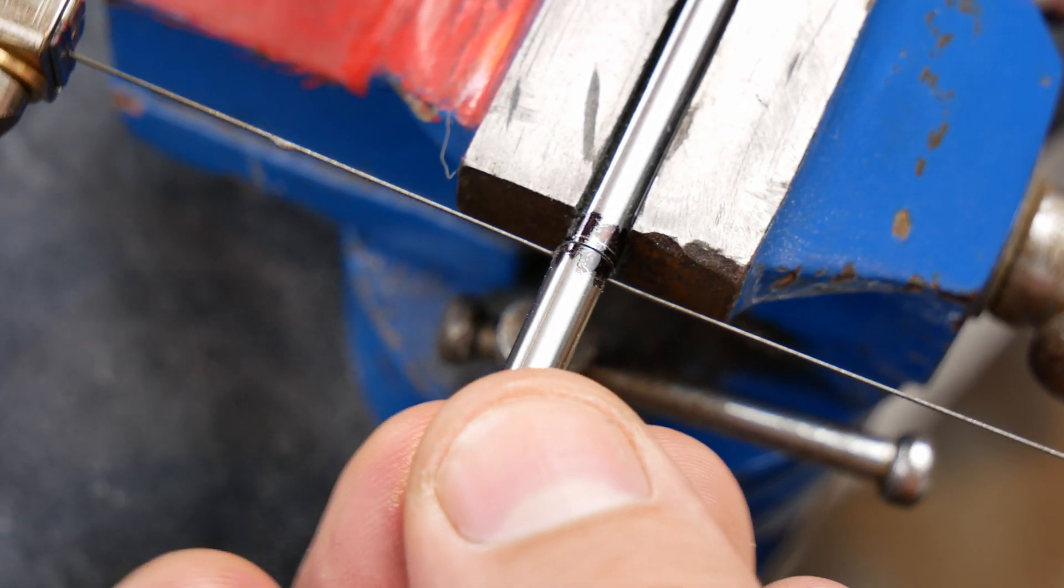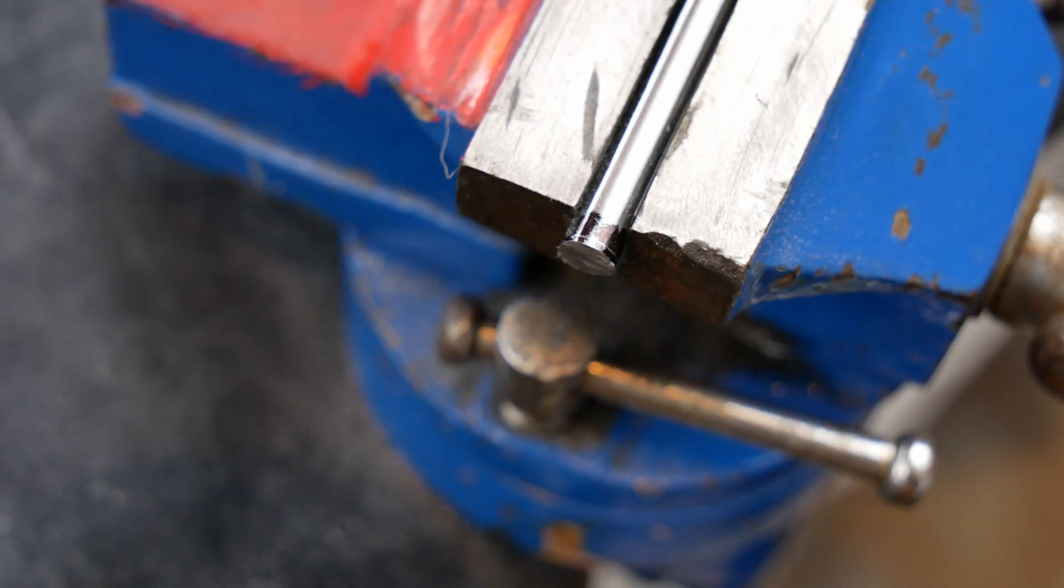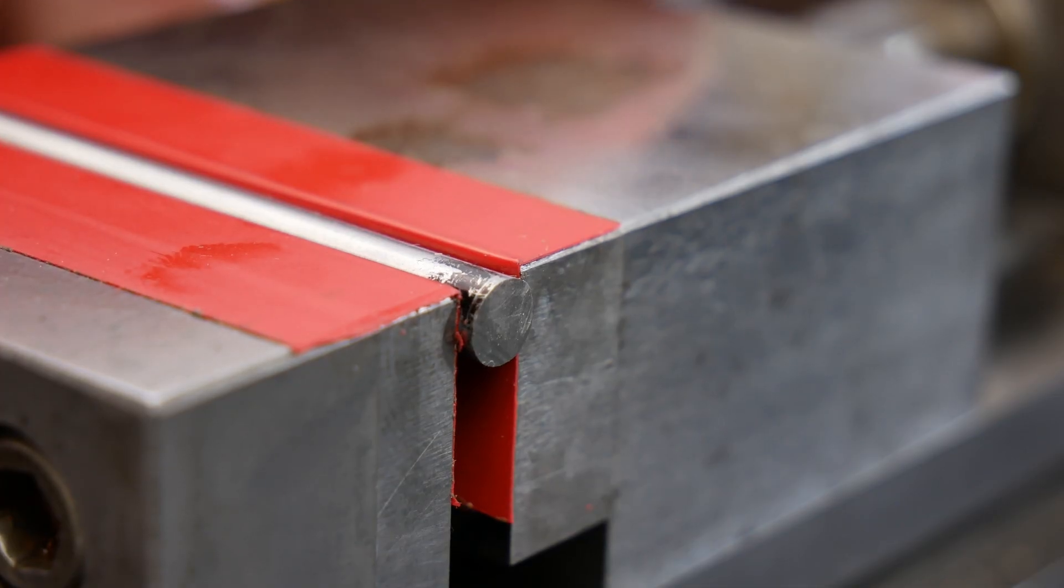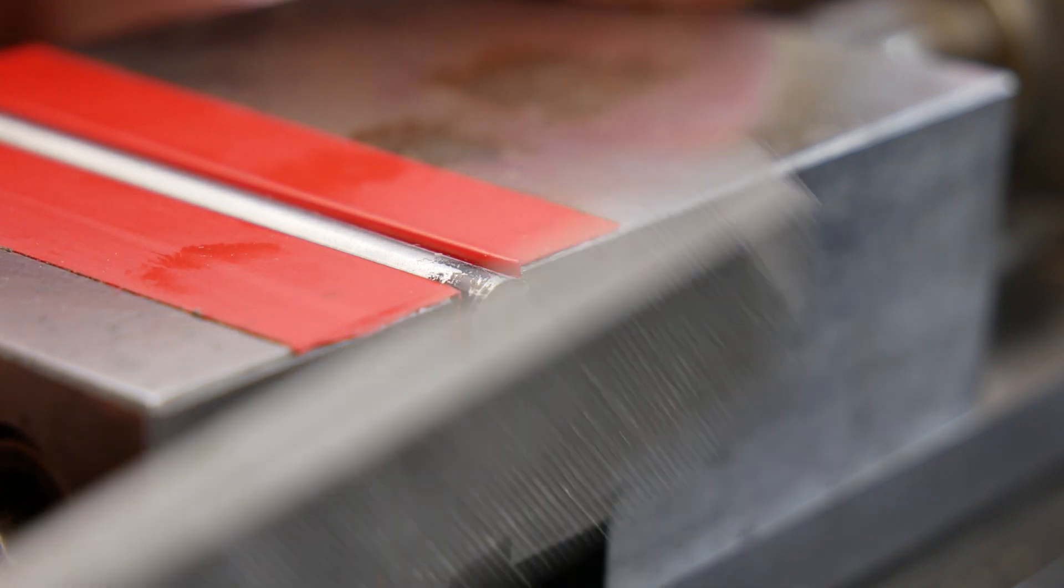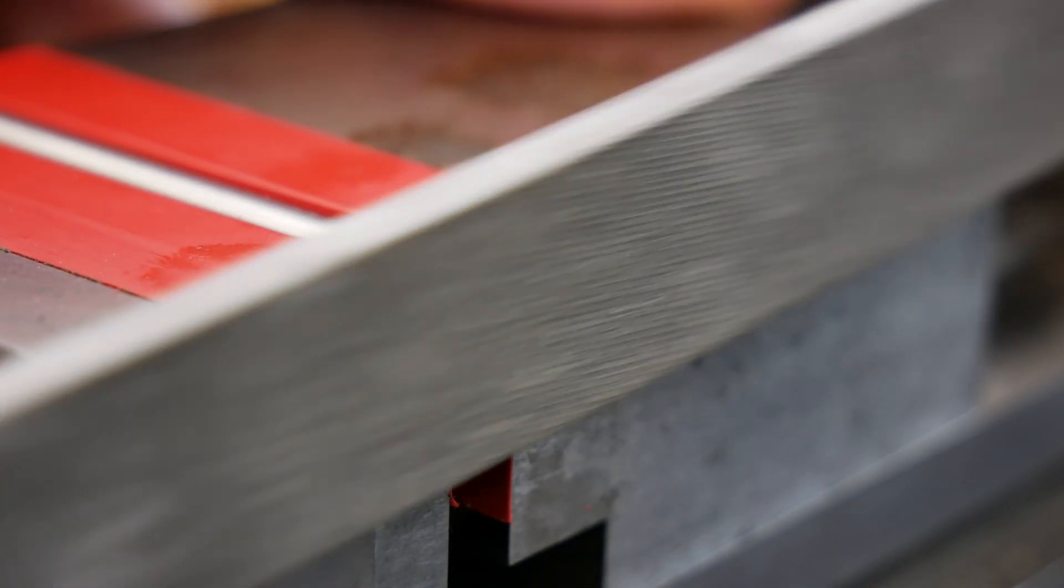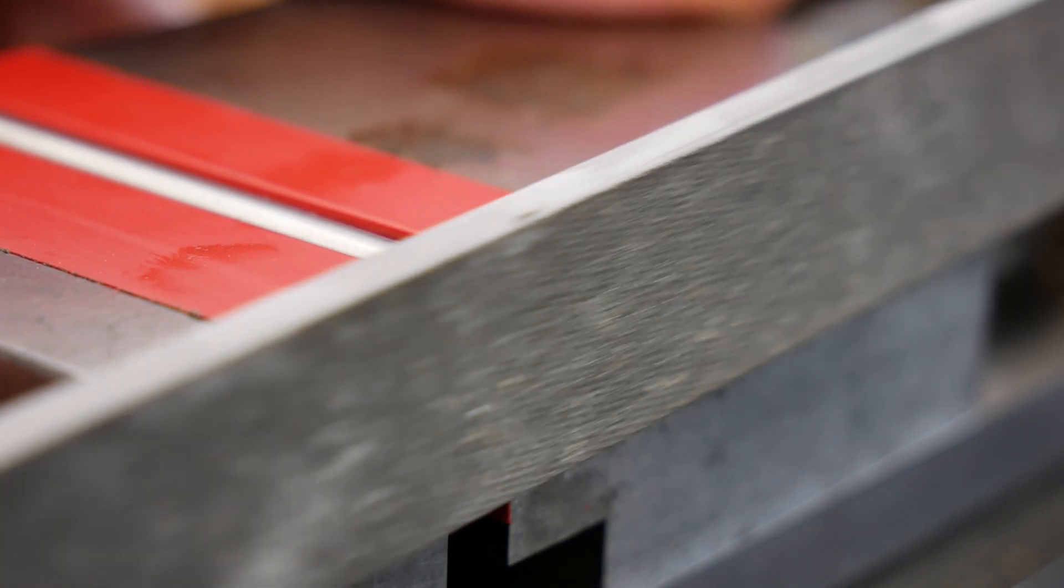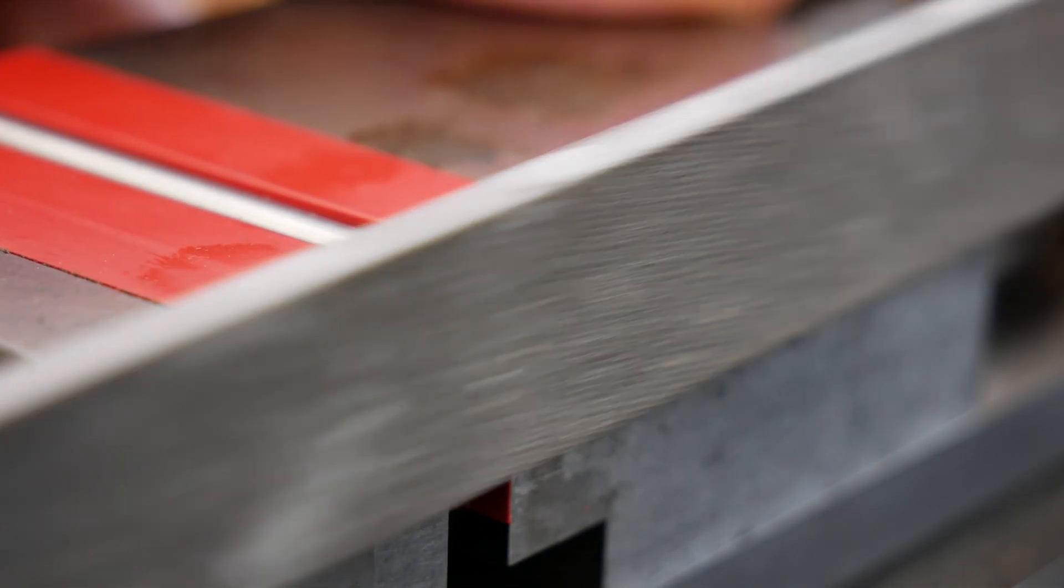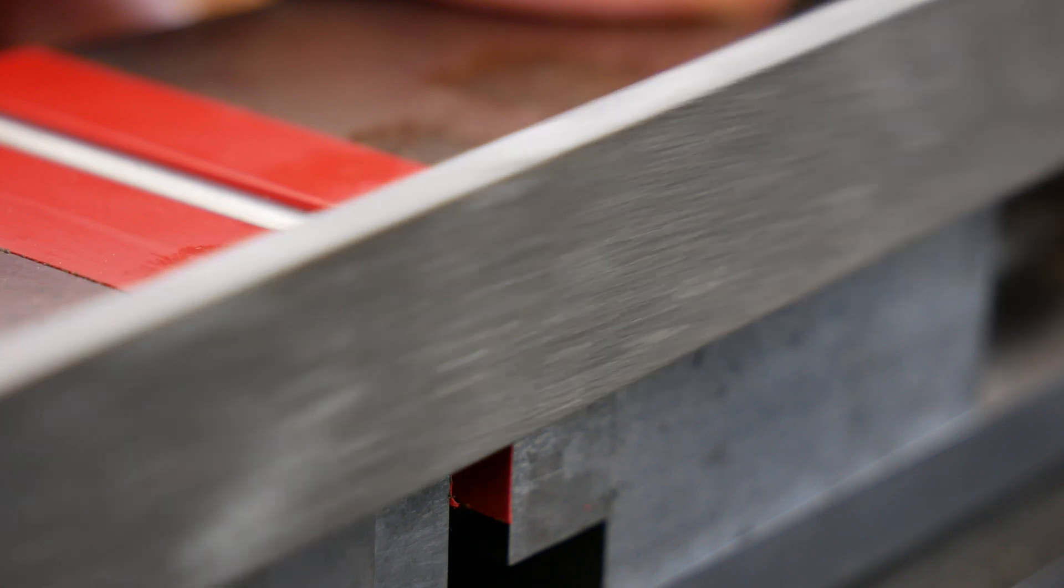But anyway, on to the first bit of filing. So I've got the rod clamped up nice and snug in this cross slide and I'll be using the edge of the slide as a reference. I'm going nice and slow, trying to keep the file square and watching how the file removes the material.